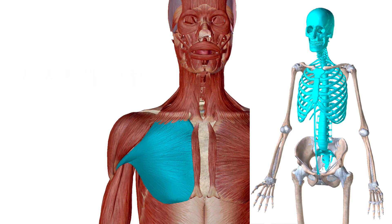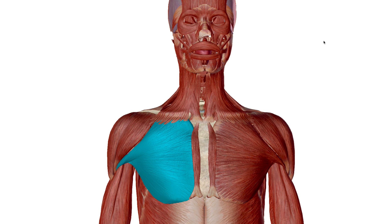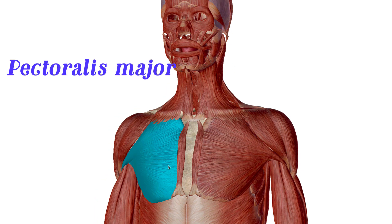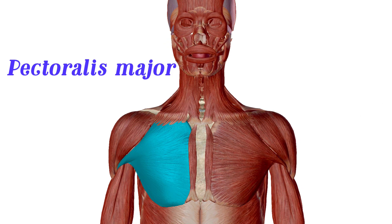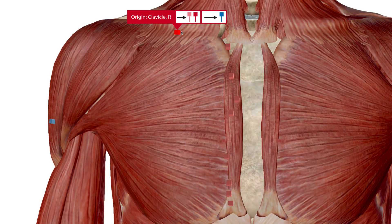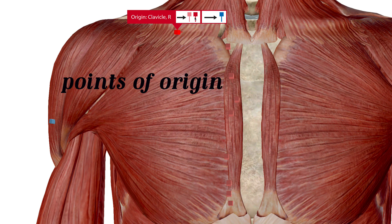Let's look at the pectoralis major first — specifically its insertion points and point of origin. Understanding where it inserts will help us understand its function. You can see about nine red pins here that mark the points of origin for the pectoralis major.